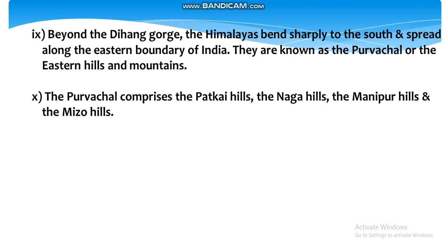The part between the Tista and Dihang rivers is known as Assam Himalayas. Beyond the Dihang Gorge, the Himalayas bend sharply to the south and spread along the eastern boundary of India. They are known as the Purvanchal or the eastern hills and mountains. Dihang mahākhanda ke bād Himālaya dakṣiṇ kī or ek tīkhā moṛ banāte hue Bhārat ke pūrvī sīmā ke sāth phail jātā hai; inheṃ Pūrvāñcal yā pūrvī pahāṛiyoṃ ke nām se jānā jātā hai. The Purvanchal comprises the Patkai Hills, the Naga Hills, the Manipur Hills and the Mizo Hills.